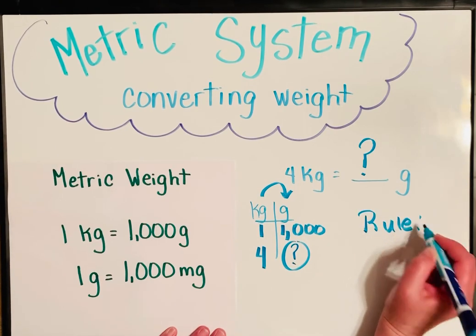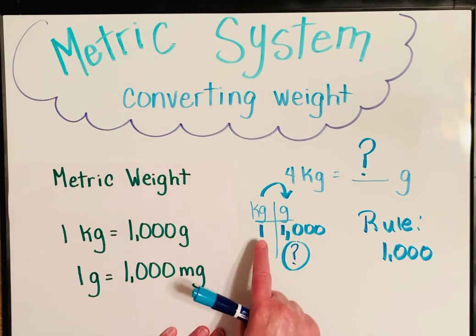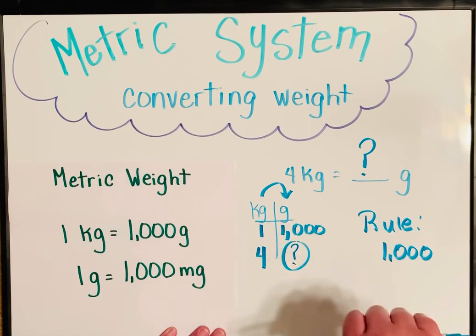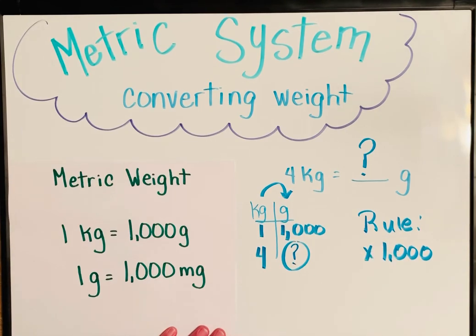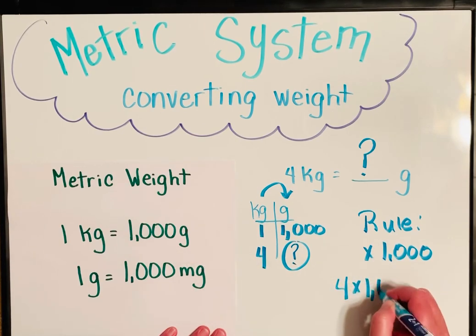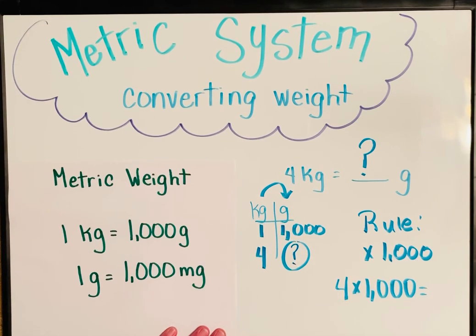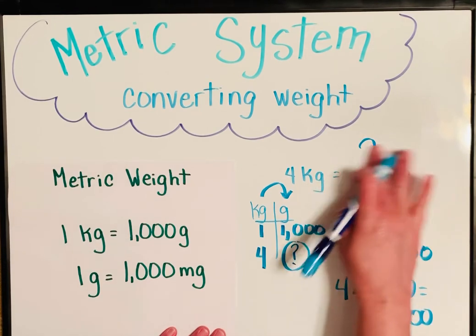My number went from a one to one thousand. Did that go up or did it go down? That's right, it went up. And when your number goes up that means you're going to multiply that rule. Then you just take, like an input-output table, you take your input, you apply your rule, and you will get your output. Four times one thousand, that's right, four thousand. So I can say that four kilograms is equal to four thousand grams.